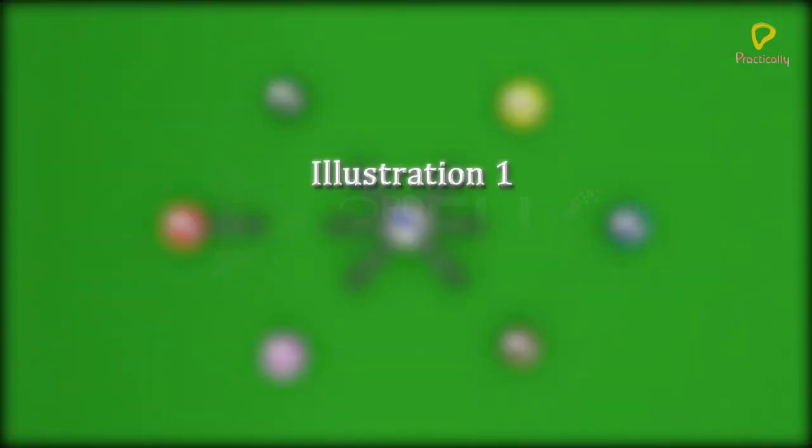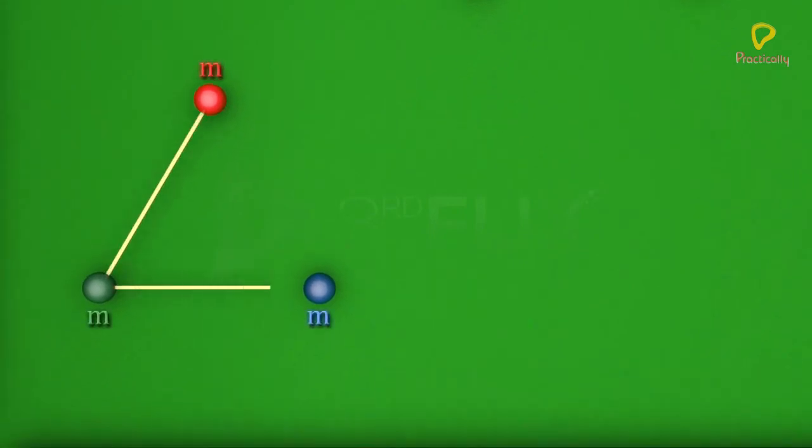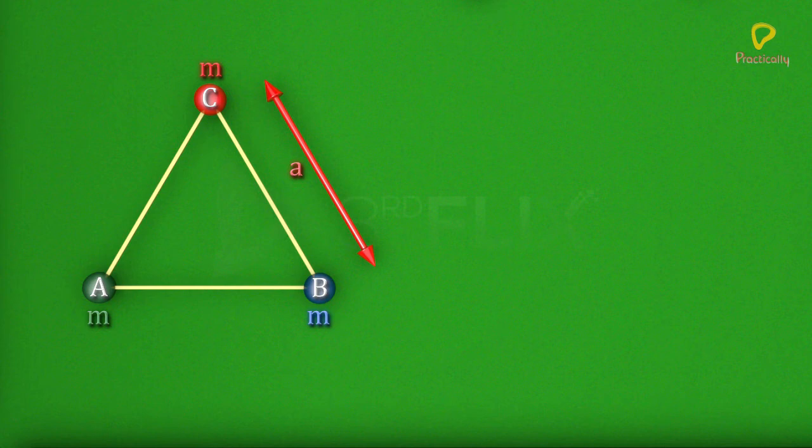Illustration 1: Consider three point objects, each of mass M, placed on the three vertices of an equilateral triangle ABC of side a. What is the magnitude of the gravitational force on any one of the masses due to the other two?